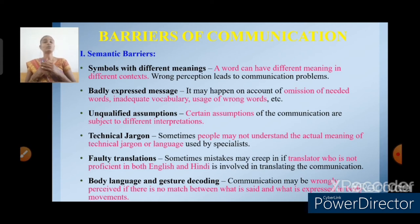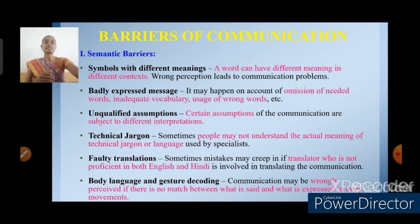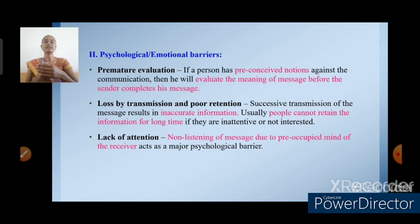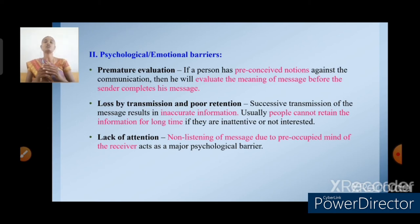Then body language and gesture decoding — communication may be wrongly perceived if there is no match between what is said and what is expressed in body movements. The second type is physical or emotional barriers. Premature evaluation — the receiver forms a preconceived notion and evaluates before the sender has completed the message. Then loss by transmission and poor retention — successive transmission of messages results in inaccurate information, and usually people cannot retain information for a long time; inattentiveness and disinterest are also barriers. Then lack of attention — not listening to the message due to a preoccupied mind of the receiver acts as a major psychological barrier.